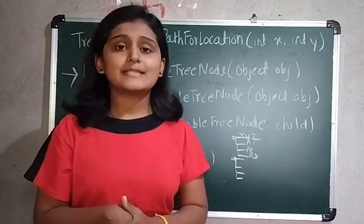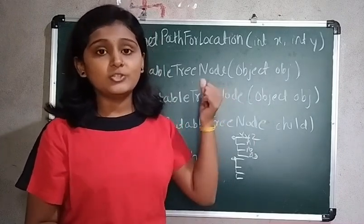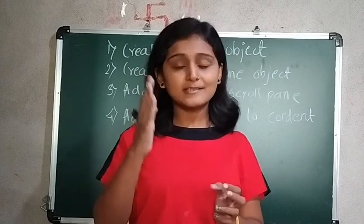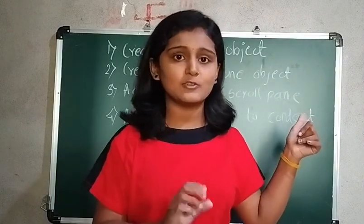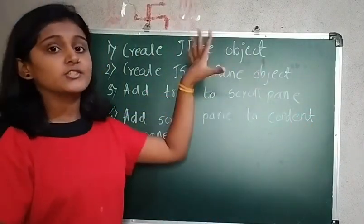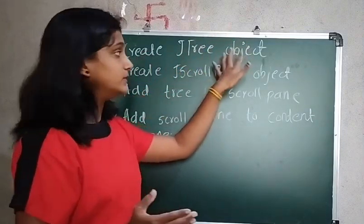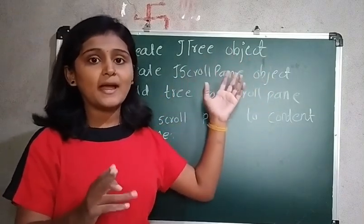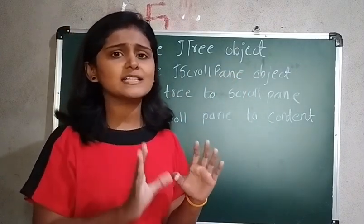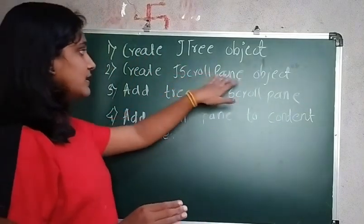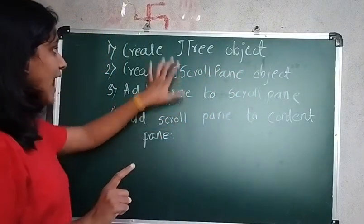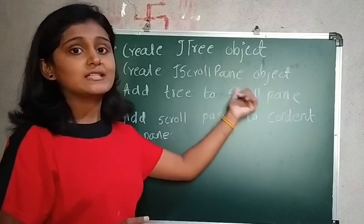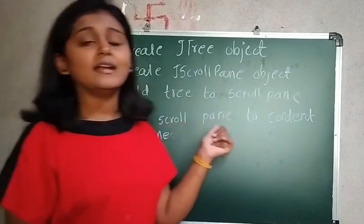Next we will see the steps one by one for how to create a JTree. These steps are important and can be asked in MCQs. First, create the object of JTree. Second, create the object of JScrollPane — JScrollPane is a vertical area which contains the component and has a scrollbar. Third, add the tree to the scroll pane. Fourth, add the scroll pane to a content pane.